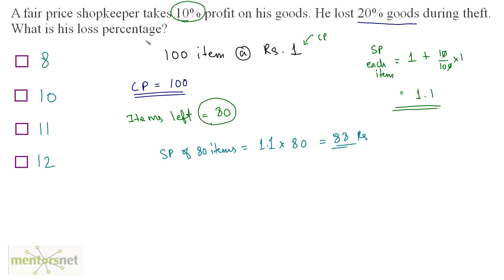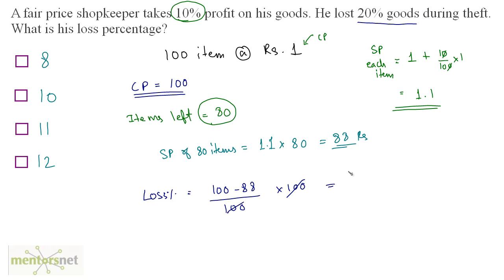We have selling price = 88 rupees and cost price = 100 rupees. Since selling price is less than cost price, there is a loss. Loss percentage equals (cost price − selling price) / cost price × 100 = (100 − 88) / 100 × 100 = 12%. So the loss percentage is 12%, and the answer is Option D.